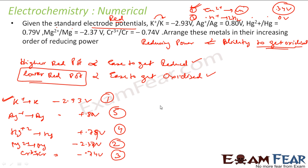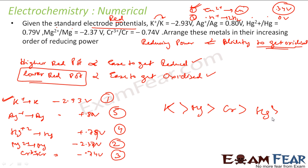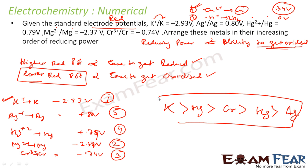So K has the highest reducing power, then chromium, then magnesium, then mercury, and then silver has the least reducing power. This is the correct increasing order of reducing power.